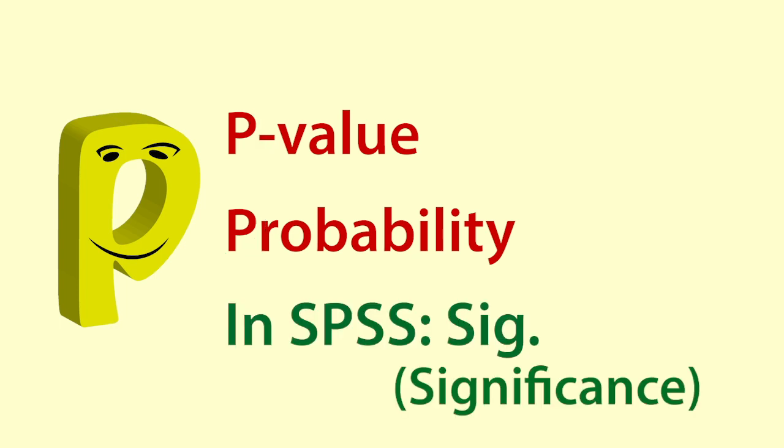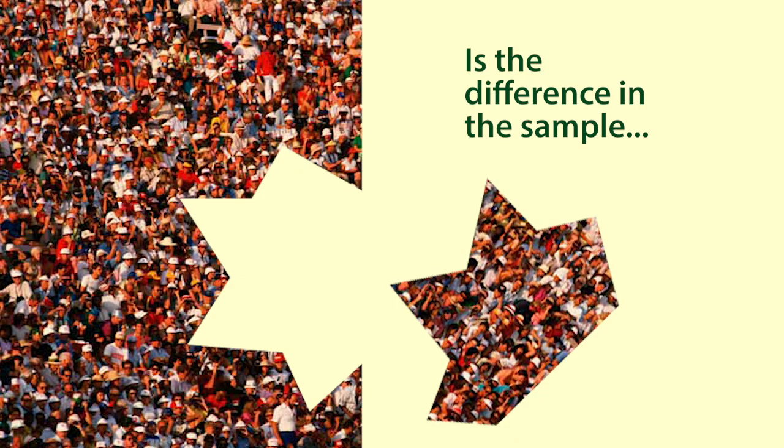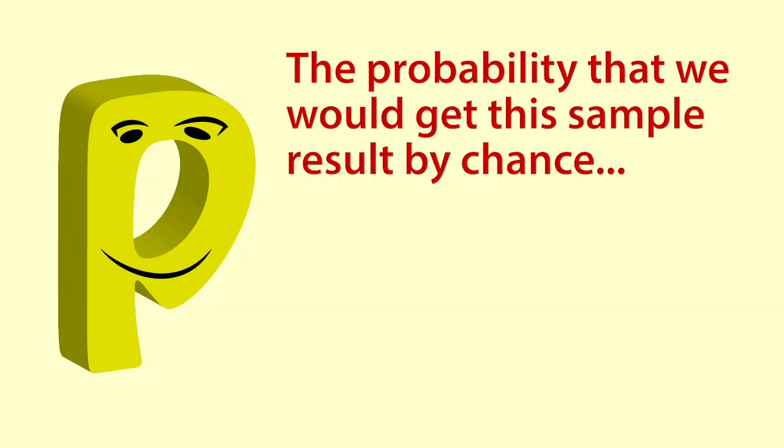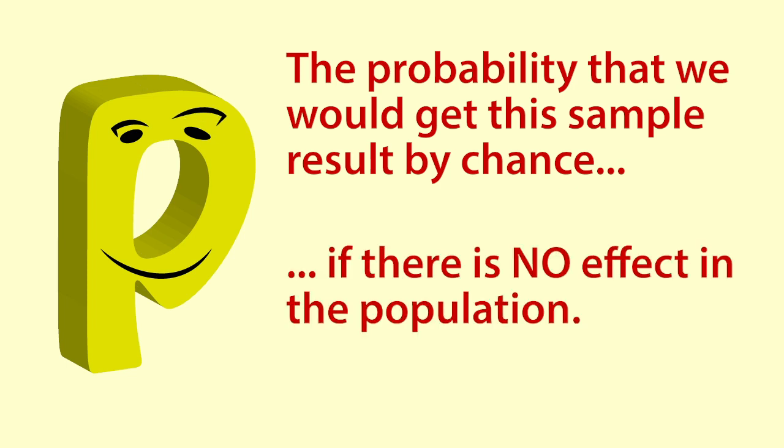In SPSS it is called sig. We want to know if an effect that shows up in a sample is evidence of an effect in the population from which the sample is drawn. The p-value tells us the probability that we would get the sample result by chance if there is no effect in the population.